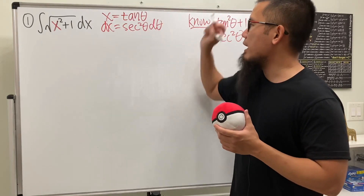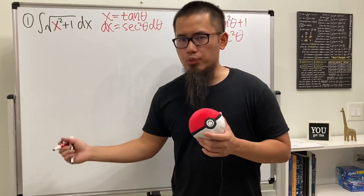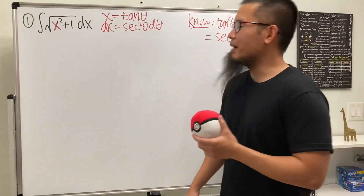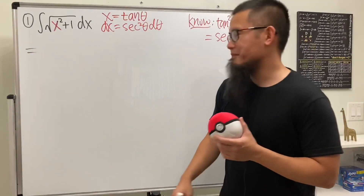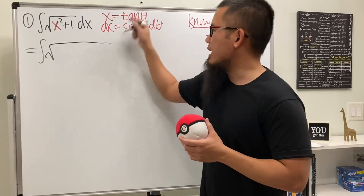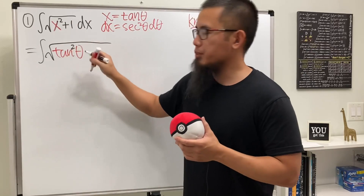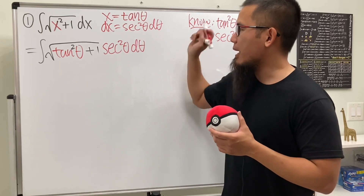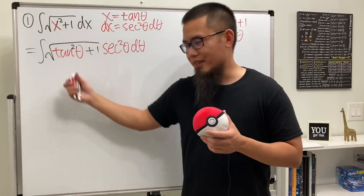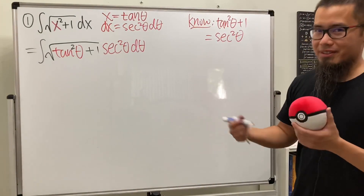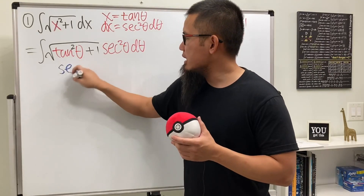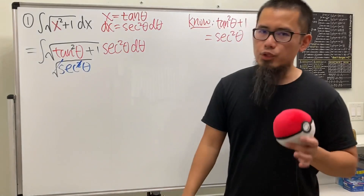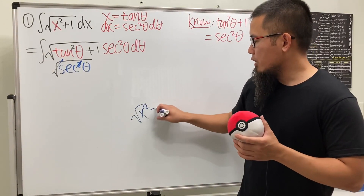Now let's take this integral to the theta world. Here is the integral: square root of (tangent squared theta plus one), and then the dx becomes sec²θ dθ. We can simplify — inside the square root we get sec²θ, and then the square and square root cancel. Technically you'd put an absolute value when you take the square root of x squared.